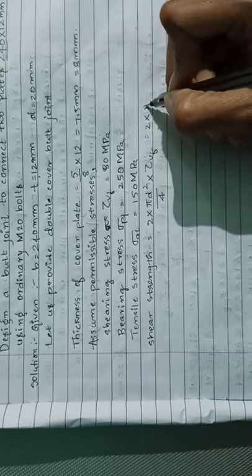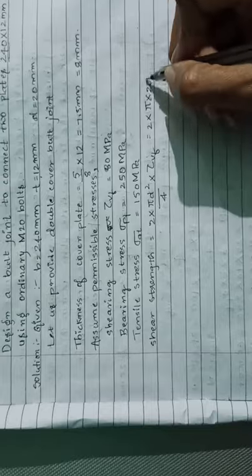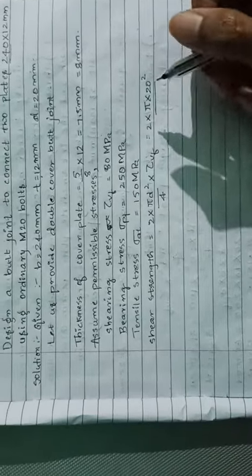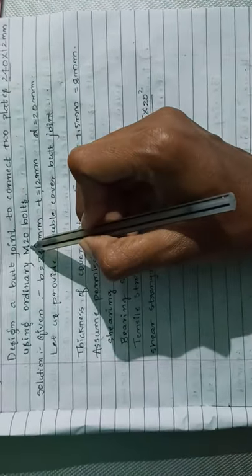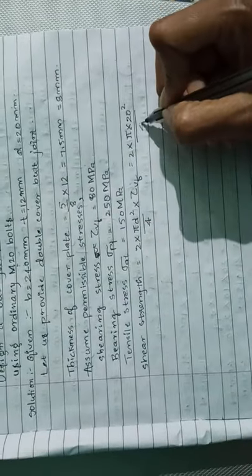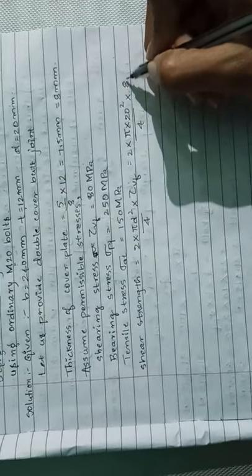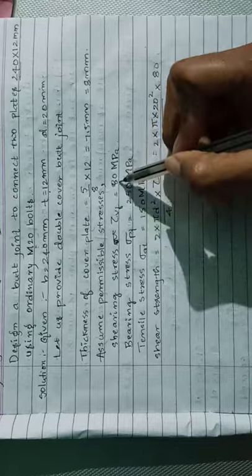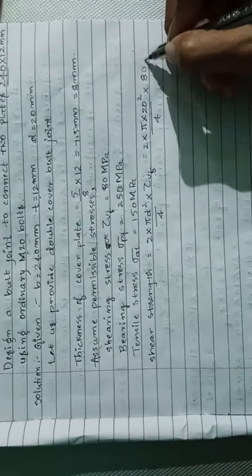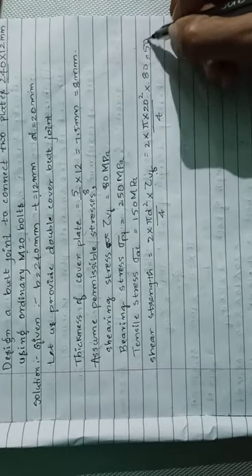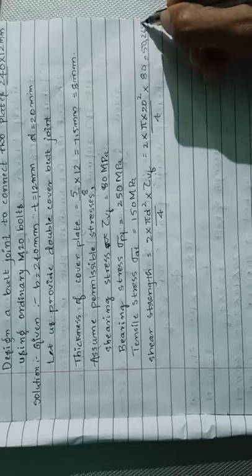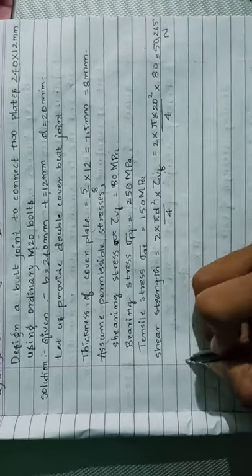2 into 20 squared—diameter of the bolt, because here it is given as M20 bolts—20 squared divided by 4 into 80 (tau_vf we have assumed as 80), it will be 50,265 Newton. Next is bearing strength.